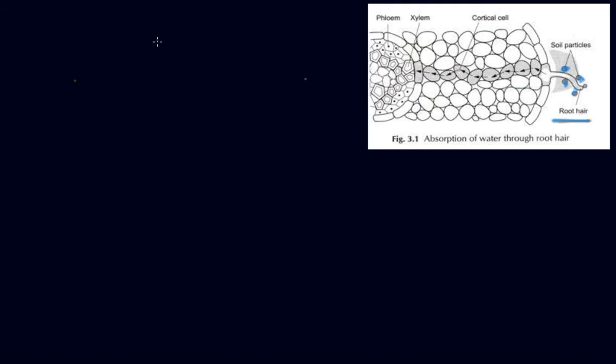Plants have pipe-like vessels to transport water and nutrients from the soil. From the cortical cells, it transports to the xylem and the xylem takes this water and minerals to the top of the leaf.